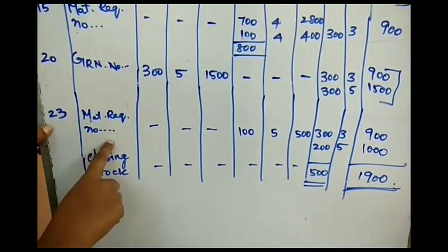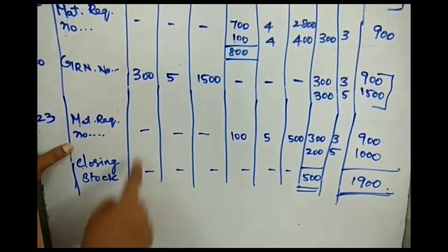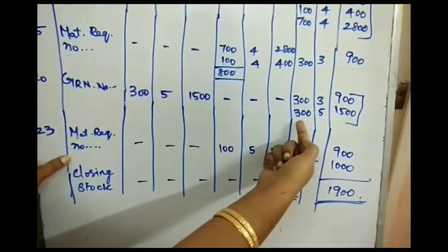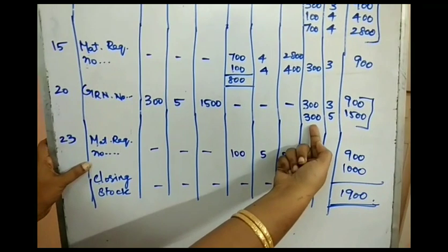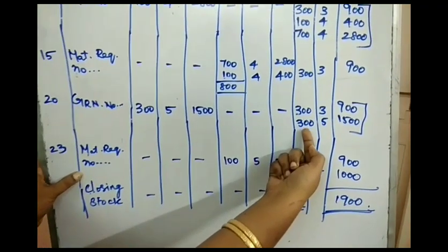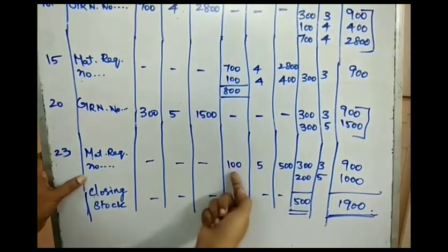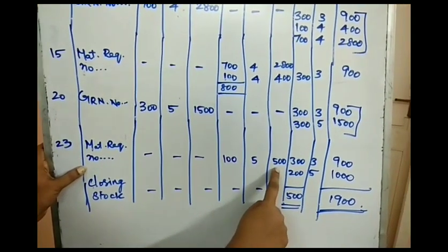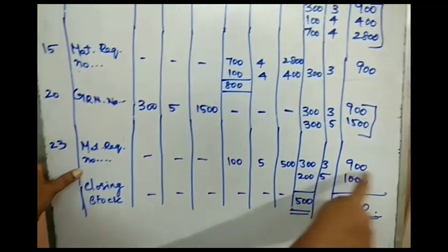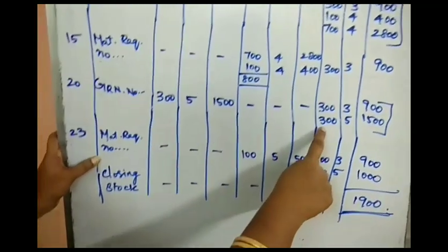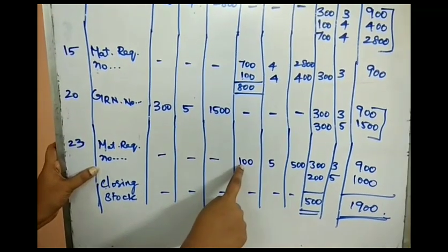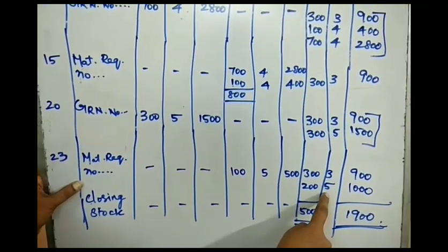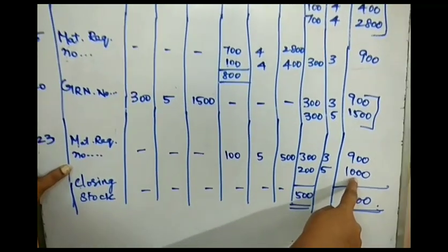On January 23rd, the last transaction of the month is an issue of 100 units, recorded under Material Requisition Note. Following LIFO, I issue 100 units from the latest lot of 300 units at ₹5, giving an issue value of ₹500. The remaining balance from that lot is 200 units at ₹5 = ₹1000.